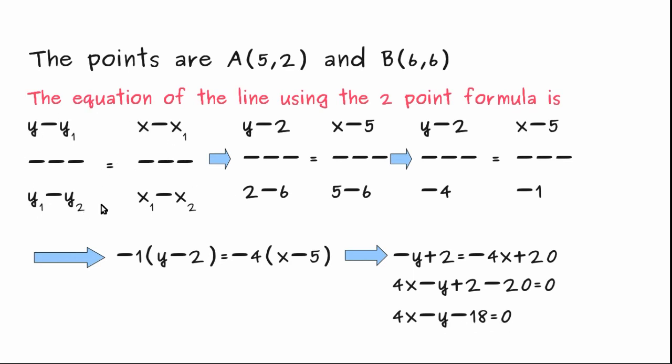This equation which is called the two-point formula for finding out the equation of a line y minus y1 upon y1 minus y2 is equal to x minus x1 upon x1 minus x2. From the two given points, we just have to identify the values of x1, y1, x2, y2 and then substitute in this equation and just get the equation of the required line.